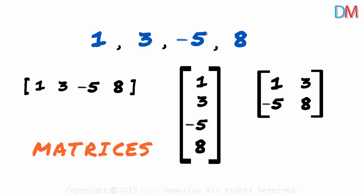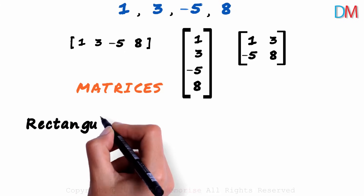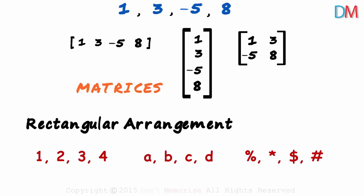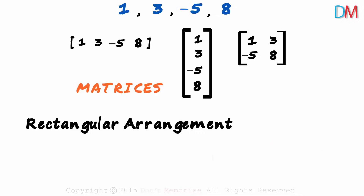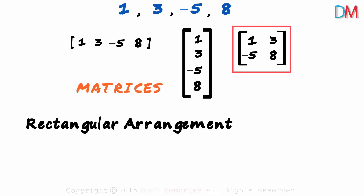But how do we properly define it? We can say that a matrix is a rectangular arrangement — but a rectangular arrangement of what? It can be anything: numbers, letters, other characters, anything. A matrix is made up of rows and columns. The first matrix has one row and four columns. The second one has four rows and one column. And the third one has two rows and two columns.